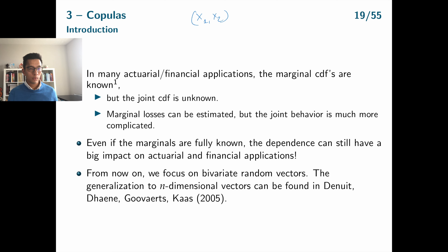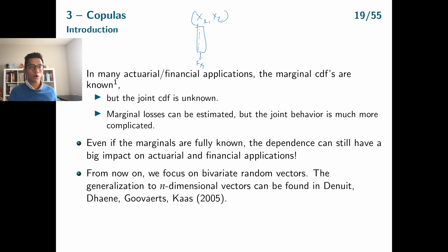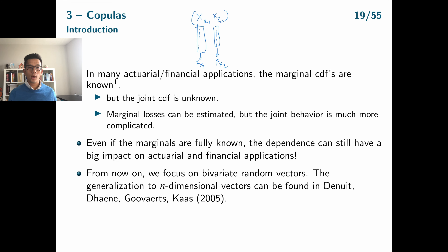Assume that we have data available for x1. This data can be used to determine the marginal distribution of x1, so the CDF F_x1. Similarly, we can use data about x2 to determine the CDF F_x2. So now we have two random variables x1 and x2, and we have information about both marginal distribution functions.